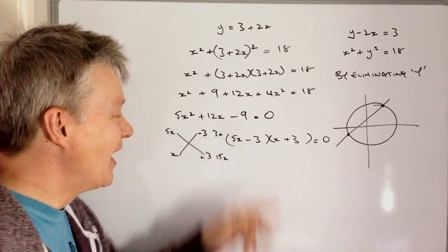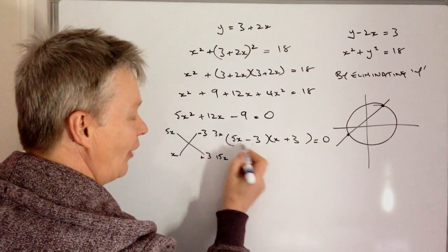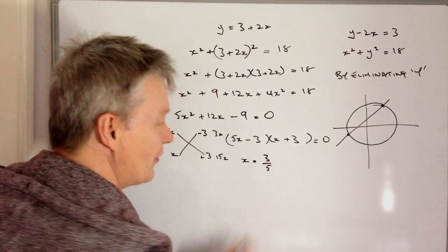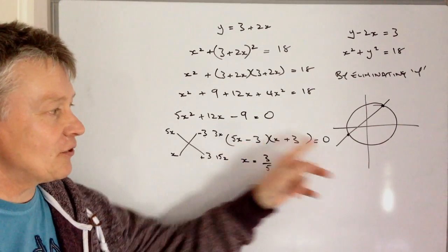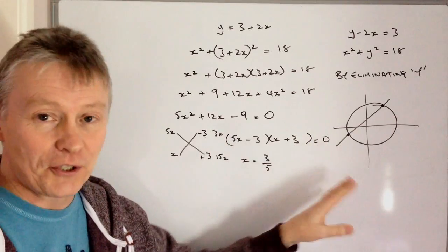Okay, so the two values of x I've got is 5x minus 3 equals zero, so therefore x equals 3 fifths. I would take that minus 3 to the other side by adding 3, so 5x equals 3, so x must equal 3 over 5.